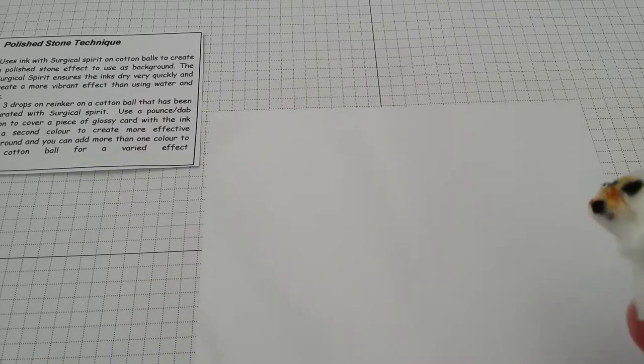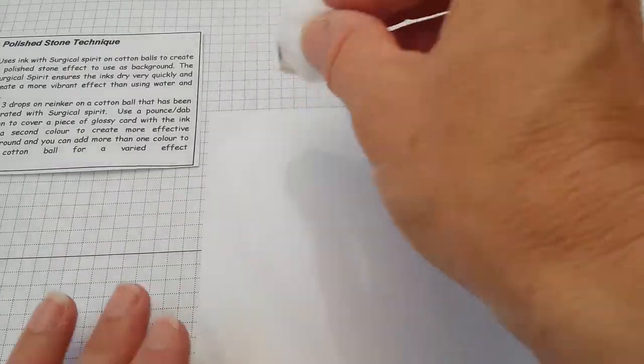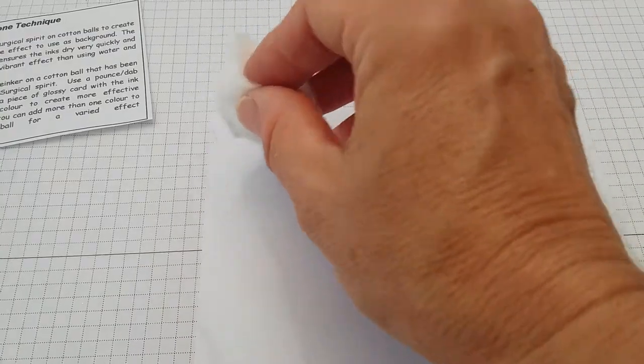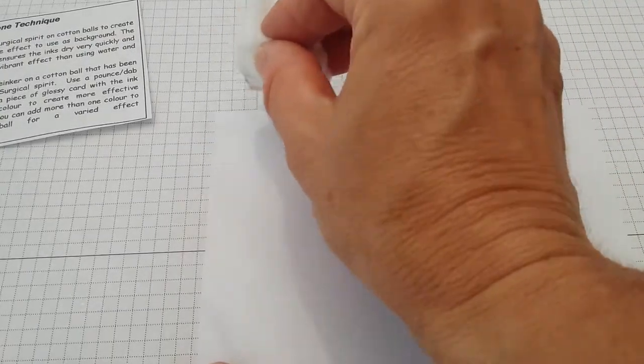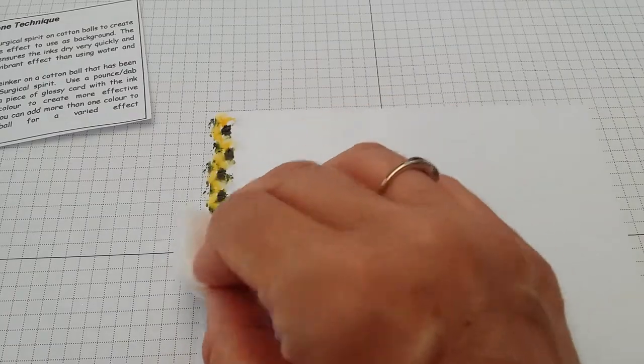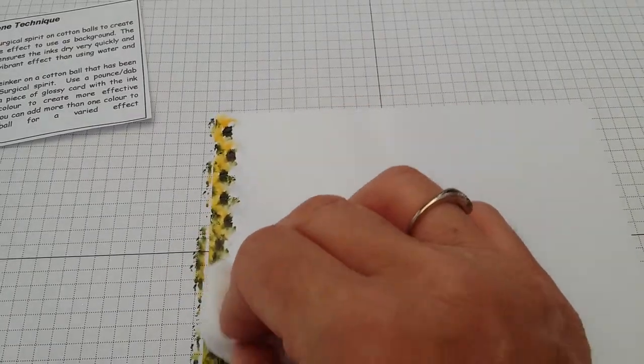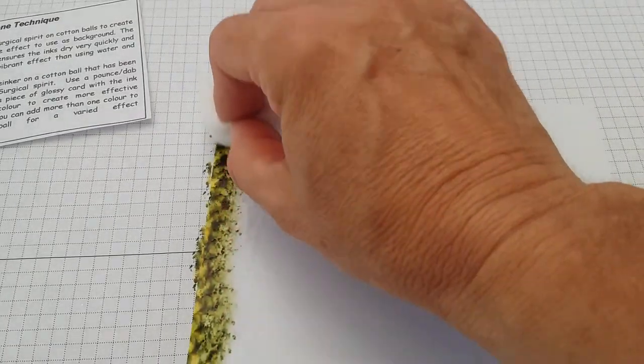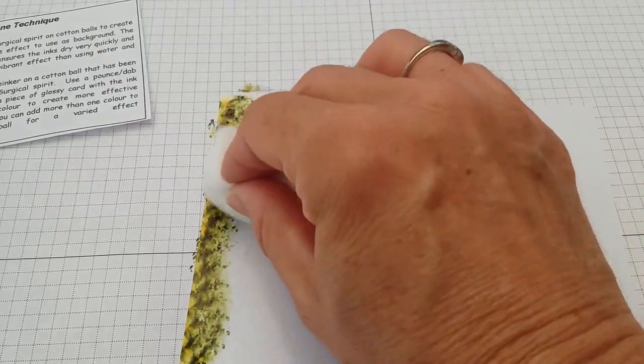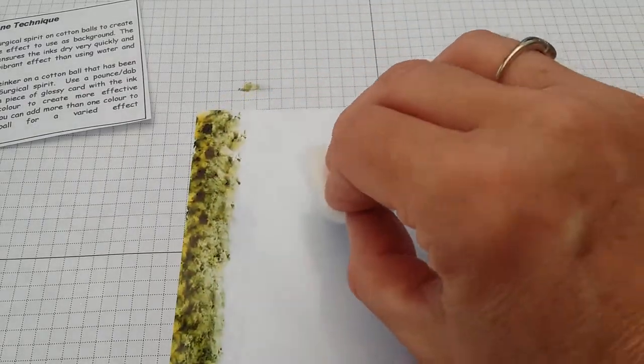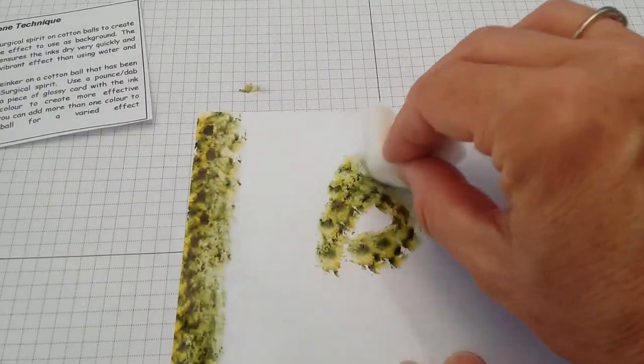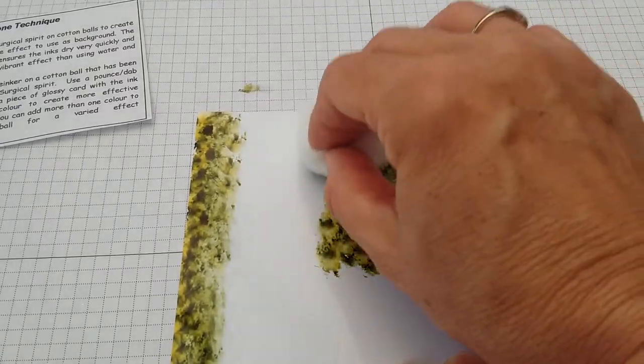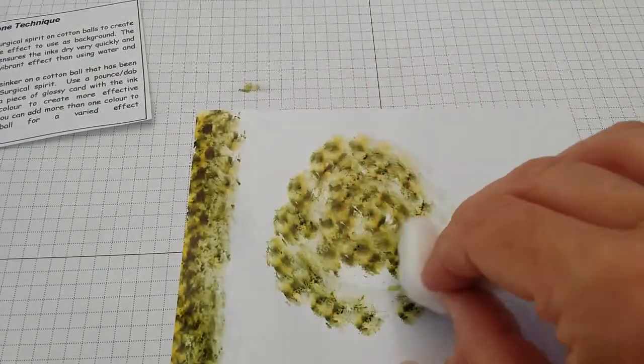And then I've got my glossy card already here cut and I'm going to start in the middle because if I start at one end, well actually I can show you, if I start at one end and I just start dabbing and then carry that through I'm going to end up with quite a regular pattern. But if I start in the middle and work out it won't be regular at all.